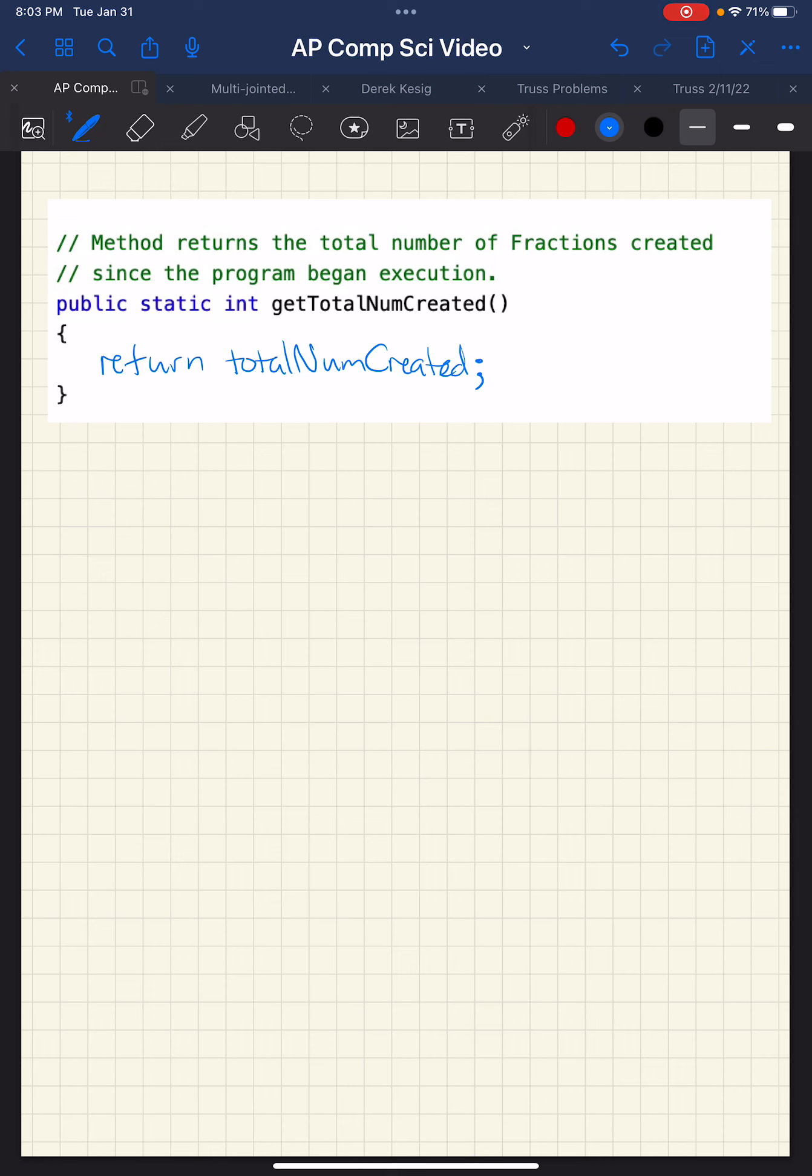So notice something important. If you had fraction A equals new fraction 3,4, and fraction B equals new fraction 2,5, and fraction, let's say there was an add method, C equals A dot add B, where the add method takes fraction A and fraction A adds itself to fraction B and returns a new fraction that's the sum of those two, right, I can't say print line A dot get total num created.